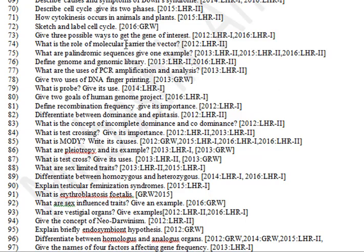Give three possible ways to get the gene of interest. What is the role of molecular carrier, the vector? What is a palindromic sequence — give one example? Define genome and genomic library. What are the uses of PCR amplification and analysis? Give two uses of DNA fingerprinting. What is a probe — give its use? Give two goals of the human genome project. Define recombination frequency and give its importance.